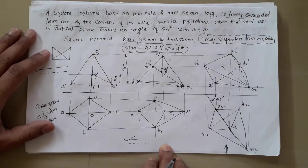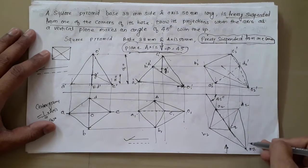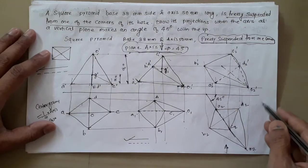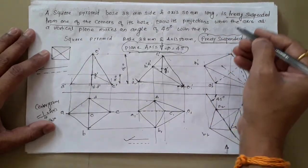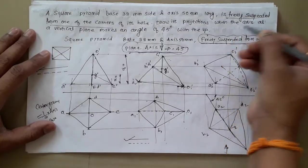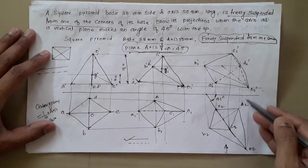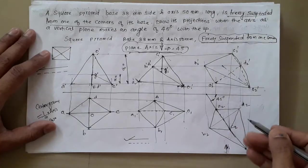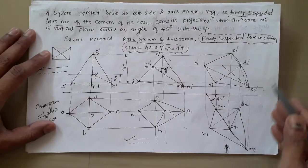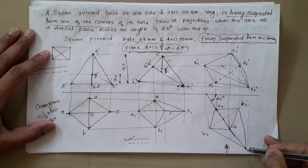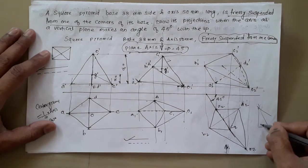In this problem, the apex is away from the XY line, meaning it is nearer to the observer. Some students may draw the apex in the upward direction — nearer to the XY line or away from the observer — as no specific condition is given. But if the problem specifically states that the apex is nearer to the observer, you must draw the O point below (away from the reference line). If the problem states O is away from the observer, you must draw O nearer to the XY line. Since no condition is given here, either orientation is correct.